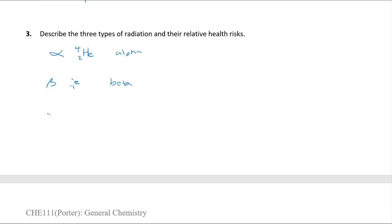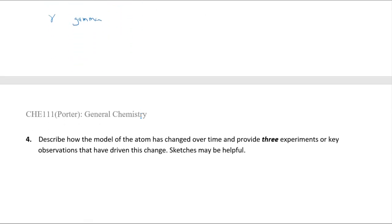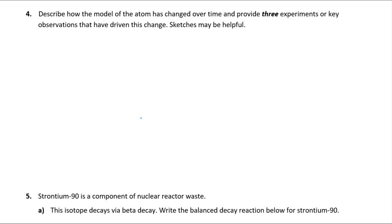Gamma radiation is a high-energy photon — very dangerous. To stop gamma you need thick lead walls, concrete containment blocks. It's very penetrating and one of the most dangerous types if you're exposed to it in the environment. Definitely scary; you don't want to be near these if you can avoid it.